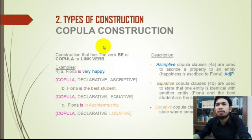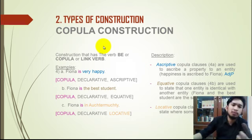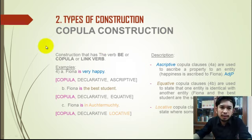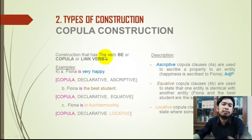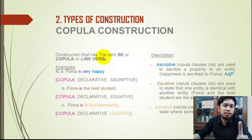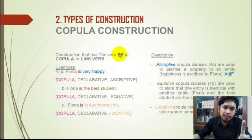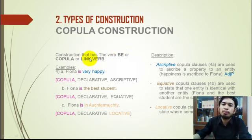Non-copula is an action verb or ordinary verb. But what about copula itself? Copula is a construction that has the verb 'be.' When we know that in one sentence there is a verb identified as 'be' or linking verb, we can identify it as a copula construction.